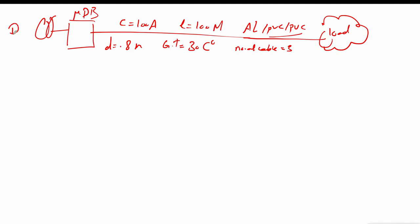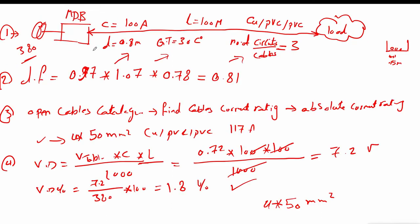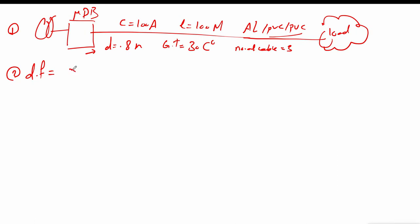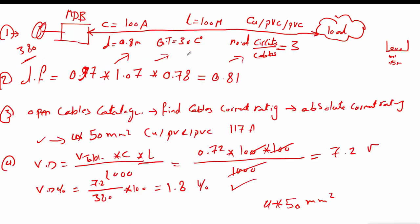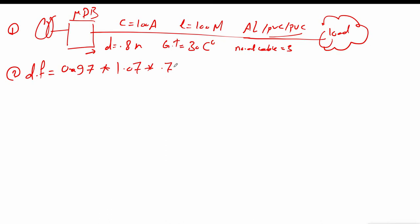Step two: calculate the rating factor. For the same installation conditions, the rating factor for aluminum shall be the same as for copper, because the correction factors relate to installation conditions, not the conductor type. We have rating factors for installation depth, ground temperature, and grouping. The final combined rating factor equals 0.81.